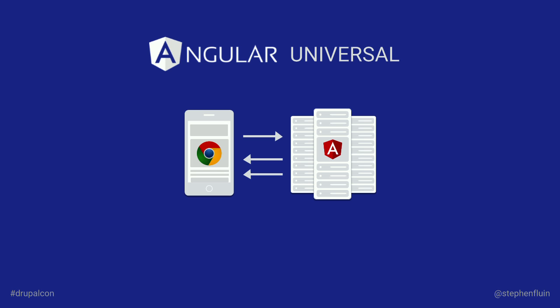Angular Universal is this idea that because we've rebuilt the platform from Angular 1 to Angular 2, we can do a lot of really interesting things. One of those things is the ability to run JavaScript code on the server side and actually pre-render pages the same way you render them on the client — but on the server — so that on first load you don't actually have to wait for any of that rendering. This sounds a little weird in the context of a Drupal conference, but there are some very nice ways it can play together.